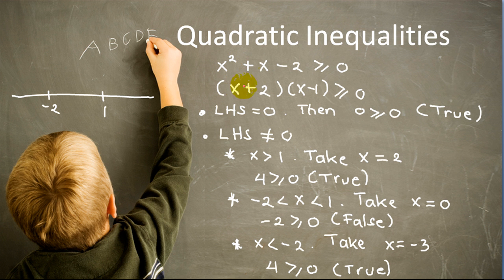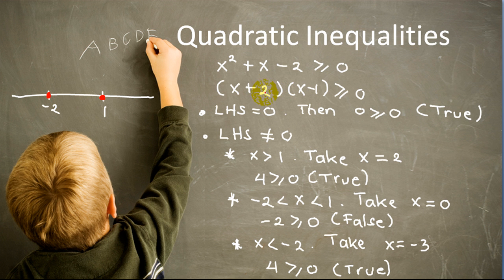First we factor the left hand side into (x + 2)(x - 1). There are two cases: when the left hand side is equal to 0, we have the statement that 0 is greater or equal to 0, which is of course a true statement. That implies that 1 and negative 2 are solutions, because they are exactly the x values that make the left hand side equal to 0.